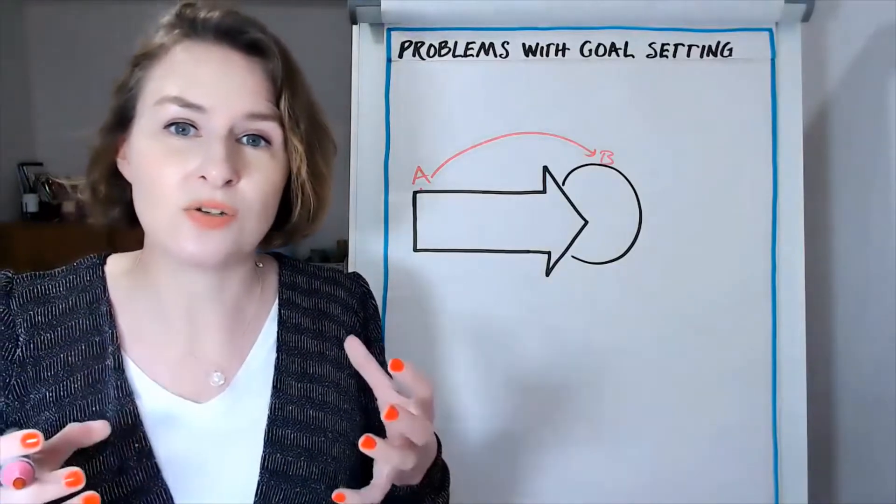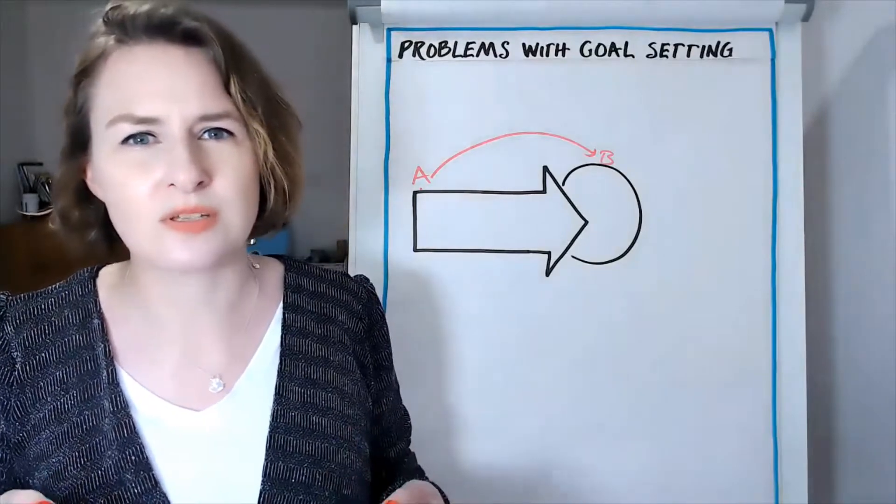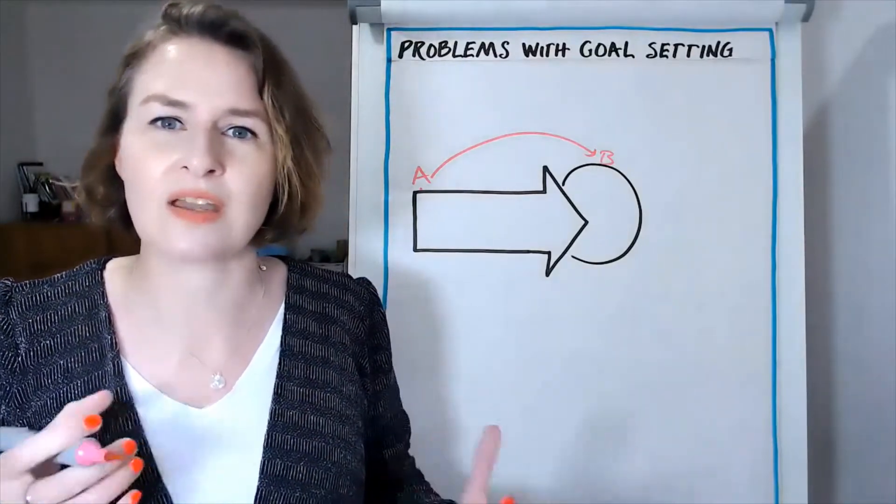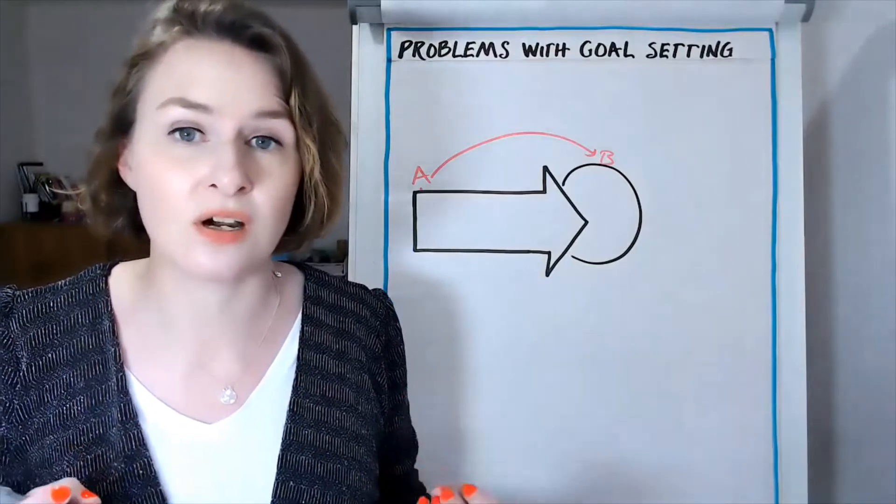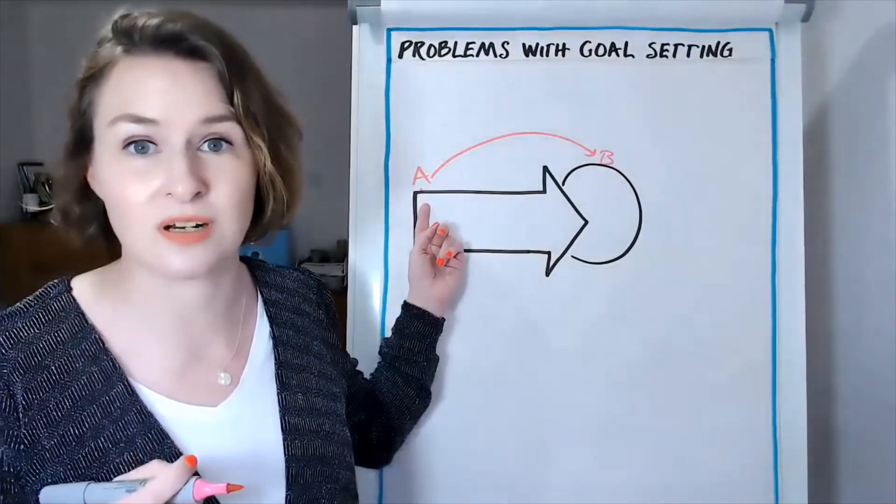And we get into what can be known as the tyranny of how - how do we do this? What are the practicalities of it? And so forth. And that can sometimes keep us in a stuck place, and sometimes even just move us back to where we started from.